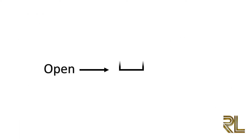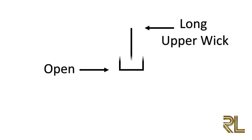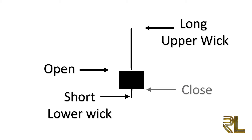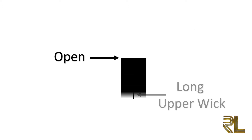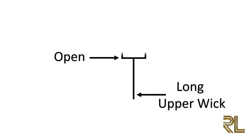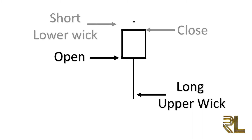If a candlestick has a longer upper wick and short lower wick, this means that buyers pushed price higher but for one reason or another sellers came in and drove price back down to end the session near its open price. If a candlestick has a long lower wick and short upper wick, this means that sellers forced price lower but buyers came in and drove prices back up to end the session near its open price.